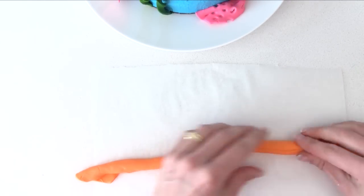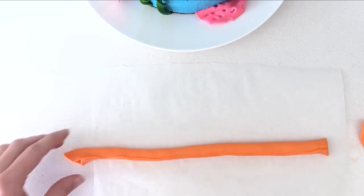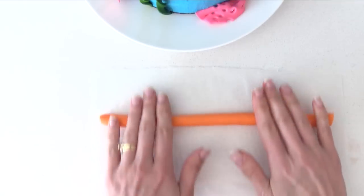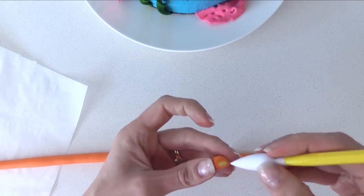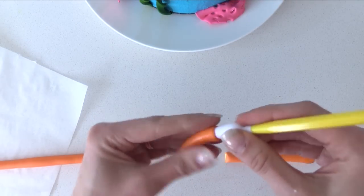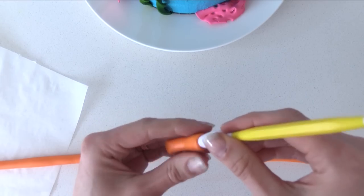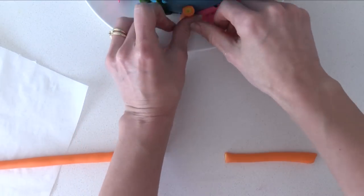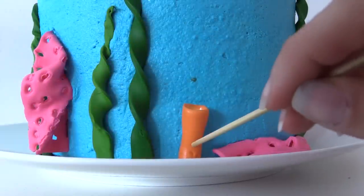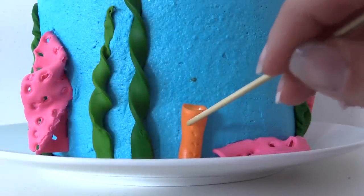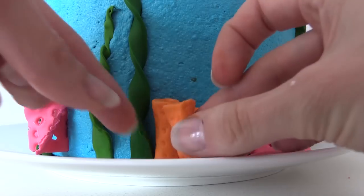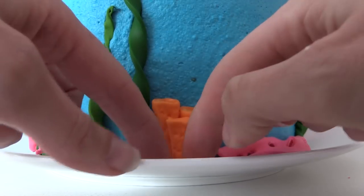To make the tube coral, roll out some orange in a strip and add a snake of yellow down the center. Roll it up so the yellow is in the middle of the tube and give it a gentle roll to smooth it out. Cut a piece from your snake and push down in the center so it makes a hole and you can see the yellow in the middle. Add that to the side of the cake and use the back of a skewer to roughen the surface. Add more of those in different sizes to make a nice little group.